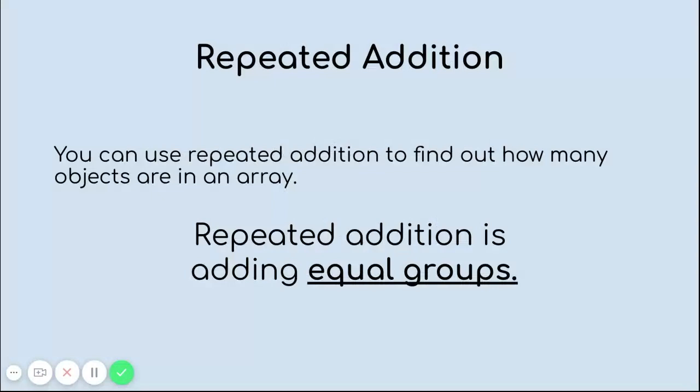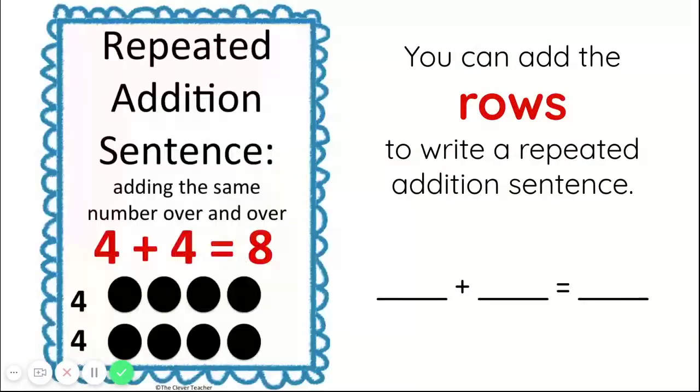Now that we've talked about rows and columns and practiced identifying arrays, we're going to talk about how we write repeated addition sentences with our arrays. You can use repeated addition to find out how many objects are in an array. Repeated addition is simply adding equal groups — equal groups means that every group has the same number of objects. A repeated addition sentence is when you add the same number over and over again. For example, looking at this repeated addition sentence, it says 4 plus 4 equals 8.